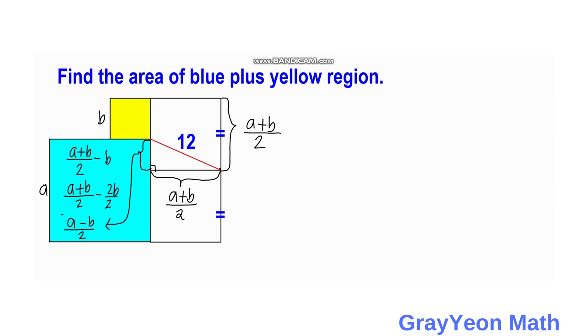And the legs are this A minus B over 2 and A plus B over 2. So we are going to make an equation about this area and we will use Pythagorean theorem.